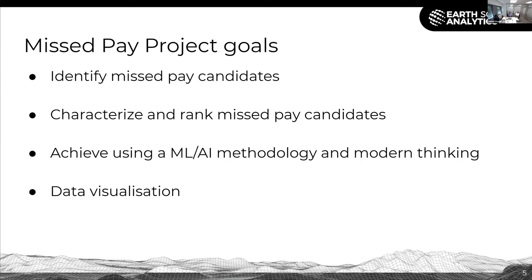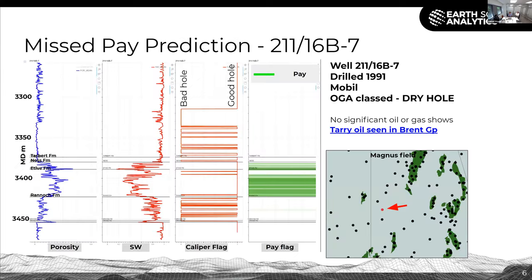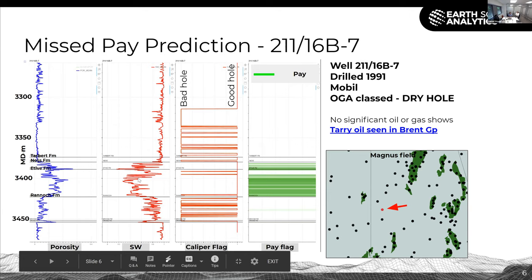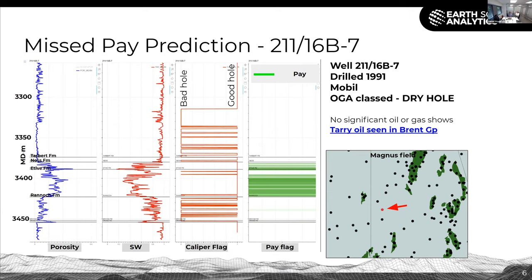The fourth element was to try and visualize the data. I want to show you upfront the type of data we are going to get. This is a missed pay prediction from quadrant 211, well 211-16b7. We see on the left in blue a predicted porosity curve, a predicted water saturation curve, a caliper flag and a pay zone flag. You can see a nice decrease in water saturation within the Tarbert, Ness, Etive and Rannoch formations, and a corresponding increase in porosity. This well was drilled in 1991 by Mobil and the OGA has classified this as a dry hole.